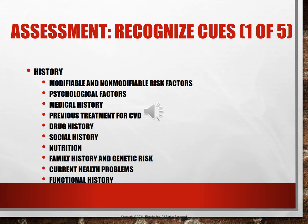Take a medical history to find out if they've had cardiac problems before, risk factors such as hypertension, previous treatments for cardiovascular disease, medications, or interventions such as a stent. Check drug history, social history, and nutrition — do they eat fast food, fry their food, or eat vegetables? High lipids, cholesterol, and triglycerides put patients at greater risk for cardiovascular disease because fat clogs the arteries.